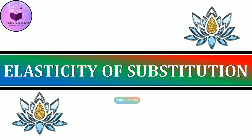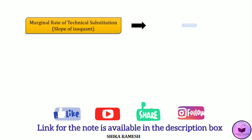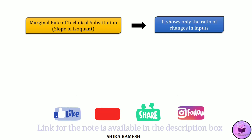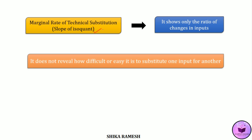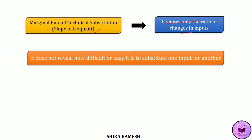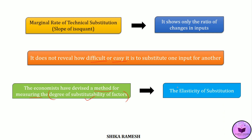Hello friends, in today's video we shall see the concept of elasticity of substitution. We know that the marginal rate of technical substitution is the rate at which one factor is substituted for another factor. In simple terms, the marginal rate of technical substitution is the slope of an isoquant. It only shows a ratio of the changes in factor inputs, but it does not reveal how difficult or easy it is to substitute one input for another. So in order to find out the degree of substitutability between factors, economists have devised a method for measuring the same, which is termed as the elasticity of substitution.